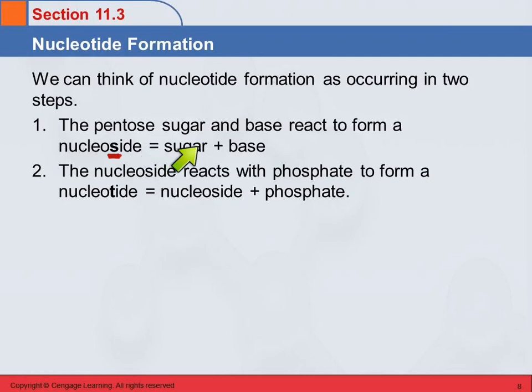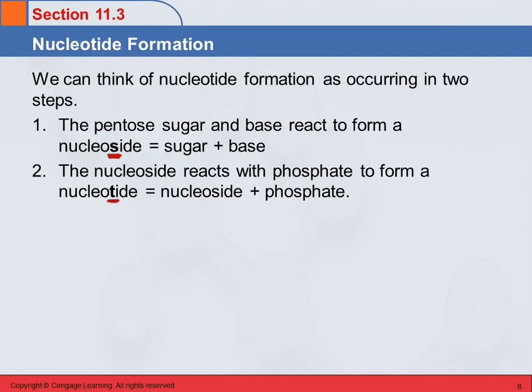The next step would be to take that nucleoside and react it with phosphate, and that will form a nucleotide. So the nucleotide is the nucleoside plus phosphate, or we could think of it as the sugar plus the base plus phosphate.